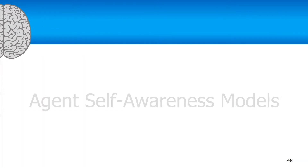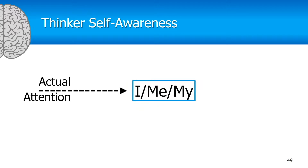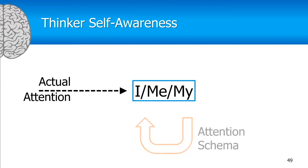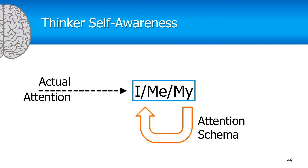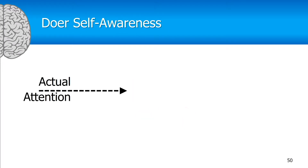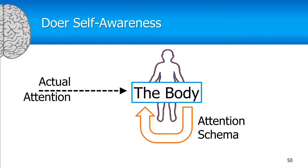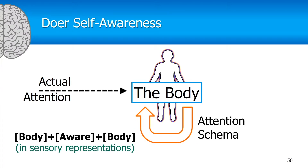Now let's look at agent self-awareness models when you're actually paying attention to yourself. Starting with the thinker — the I, me, my — if you're paying attention to yourself, you get that attention schema pointing from yourself back to yourself, and the thinker would express this by saying, 'I am aware of me.' For the doer, the self-model is the body, so the doer would have the feeling: body-aware of body.